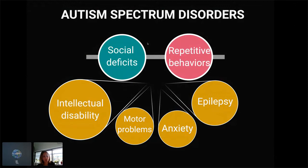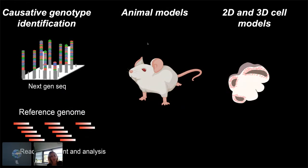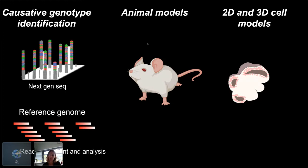Those core features most often coexist with other symptoms including intellectual disability, motor problems, anxiety, and epilepsy. So we are studying not only autistic features but also some of those comorbidities. What we are doing is combining human genetic data — using humans as our screening model to identify genes with high impact in the brain — and then modeling those disorders using the same genetic mutations in animal models as well as 2D and 3D cell models.